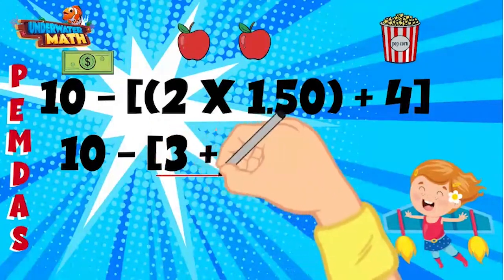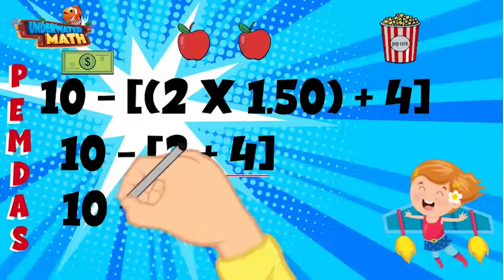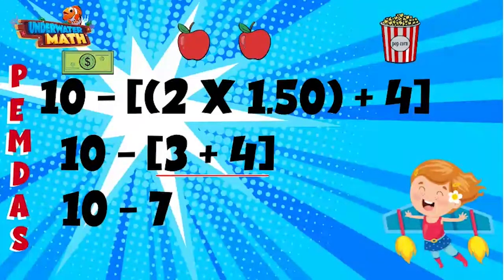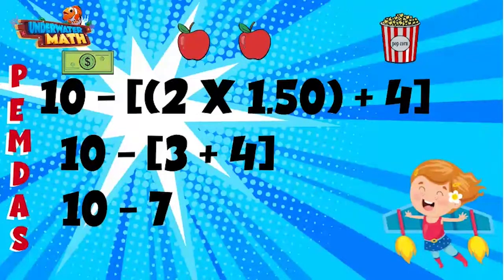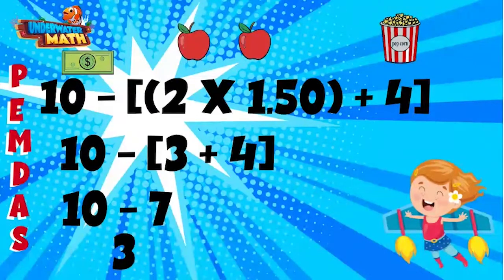We now have three plus four, which is seven. We can show this in our next line. Since there is just one digit in the parentheses, we can get rid of the symbols. We are now done with parentheses and do not have exponents, multiplication, or division, so we can move on to addition and subtraction. We are left with ten minus seven, which is three.